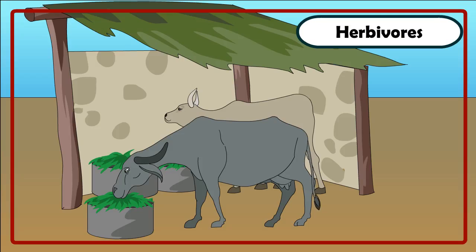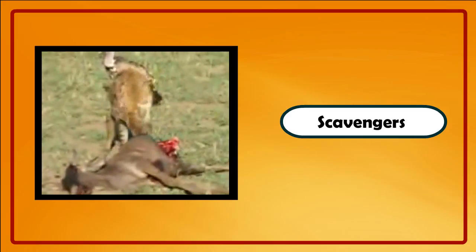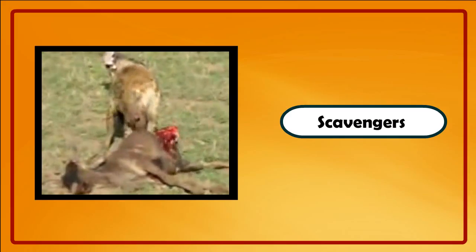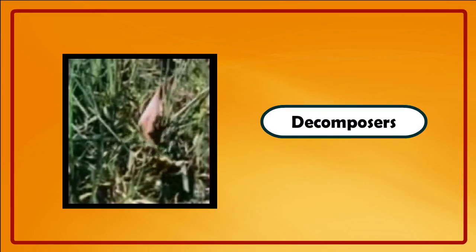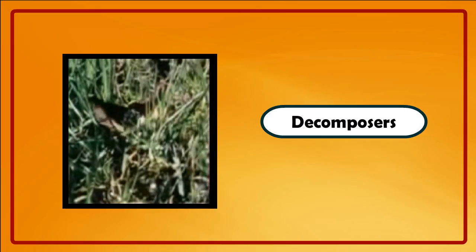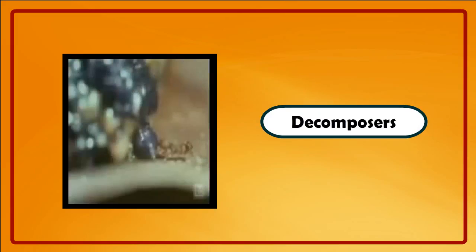Herbivores are plant-eating animals like cow, goat and deer. Omnivores eat both plants and animals like cockroach, bear and man. Scavengers eat the flesh of dead animals like vultures and hyena. Decomposers feed on dead and decaying plants and animals like bacteria and fungi.